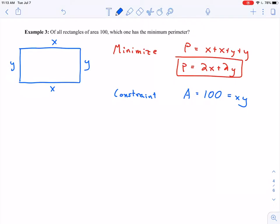So here's a constraint I'd like to solve for one of these variables. It doesn't really matter which one. We've been solving for y in the last few. Why don't I solve for x? Let's just change it up a little bit. So x equals 100 divided by y. I'm going to take this constraint, plug that into my objective function, so that I have something that's easier to work with.